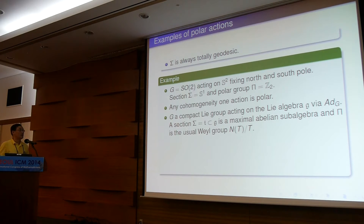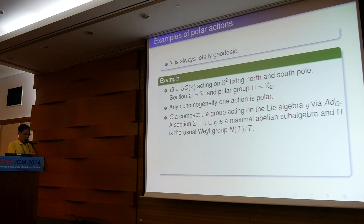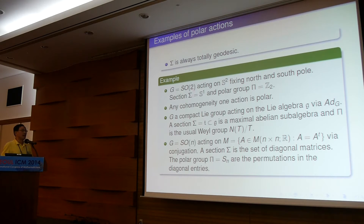Another important example: if you consider a compact Lie group acting on its Lie algebra by the adjoint action, this is a polar action. The section is the maximal abelian sub-algebra, and the polar group is the familiar Weyl group of the Lie group. This shows that this definition is really trying to get a more general theory than Lie theory. One more example: an orthogonal group acting on symmetric m×m matrices by conjugation is a polar action. The section is the set of diagonal matrices, and the polar group is the permutation group on n letters.